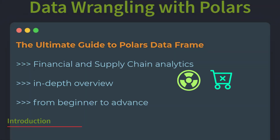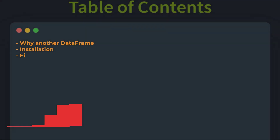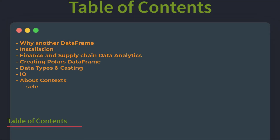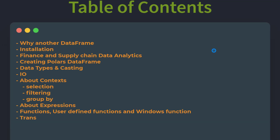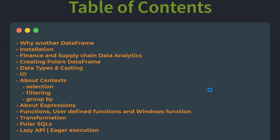Hello friends, welcome to my next tutorial in the data wrangling series — the ultimate guide to data wrangling with Python using Rust Polars DataFrame to work with finance and supply chain data analytics. In the first video I covered how to create finance and supply chain data using Polars Series and DataFrame. In the second video we learned about Polars contexts. Today we are going to discuss the basics of Polars expressions, and in follow-up videos we'll take a deep dive into Polars expressions for data transformation.